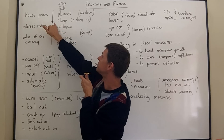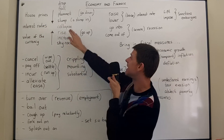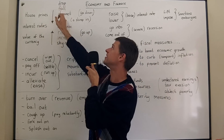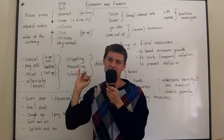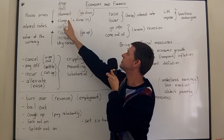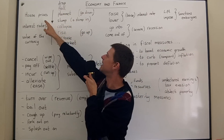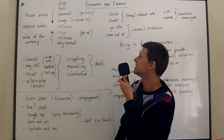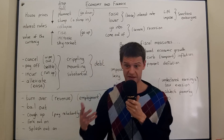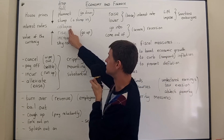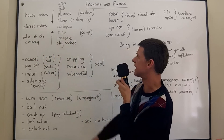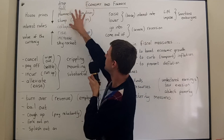You can also say house prices have slumped, or there has been a slump in house prices. You can say a drop in house prices or a fall in house prices, but you can't say 'a plummet in house prices' — plummet is a verb, not a noun. You can also say house prices have collapsed. We don't generally say 'a collapse in house prices,' so collapse is also usually used as a verb. Interest rates and the value of your currency can collapse as well. All of these are about going down.